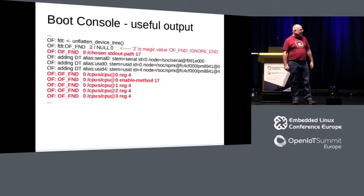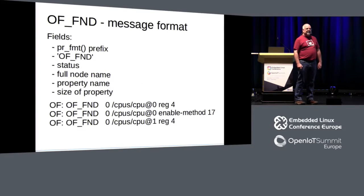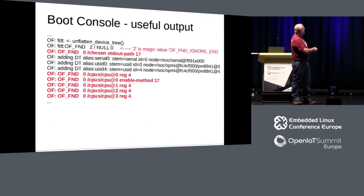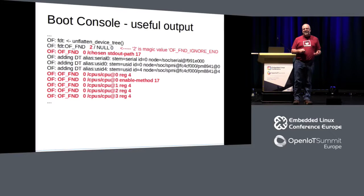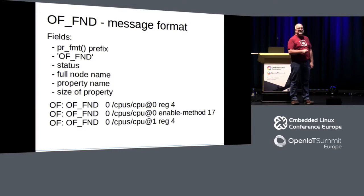Once you've gotten past that marker message, anything after it is going to be a useful message. These are OF_find messages. The format is: first there's a PR_FMT prefix — in this case 'OF:'. Each file optionally has a PR format that may differ. Then the OFND marker, which is always there to search for. Then a status, then the full node name — that full path from the root all the way down — then the name of the property being accessed, and how large the property is.